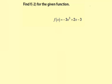Find f of negative 2 for the given function. f of x equals negative 3x to the third plus 2x minus 3. So finding f of negative 2, we input negative 2 for x and then see what we get for an output.